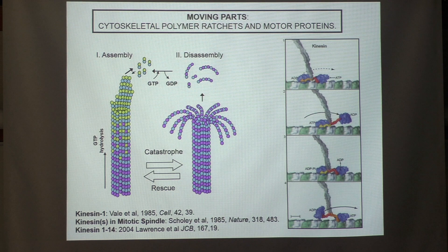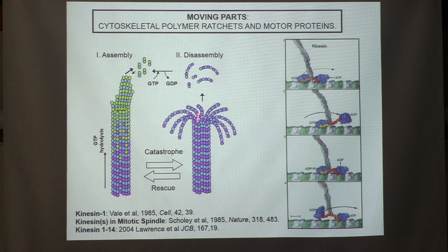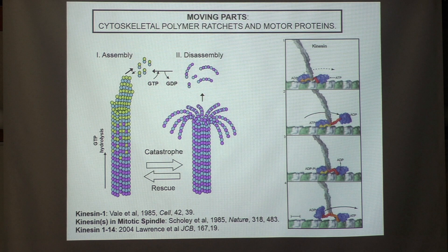Microtubules are assembled from alpha-beta tubulin heterodimers in a head-to-tail fashion, giving the microtubule a structural polarity — one end is the plus end, the other the minus end. Because tubulin is a GTPase, GTP tubulin subunits tend to assemble while GDP tubulin subunits tend to disassemble. The polymer undergoes dynamic instability, discovered by Tim Mitchison, stochastically switching between phases of assembly and disassembly. An assembling microtubule can exert pushing forces; a disassembling one can exert pulling forces.